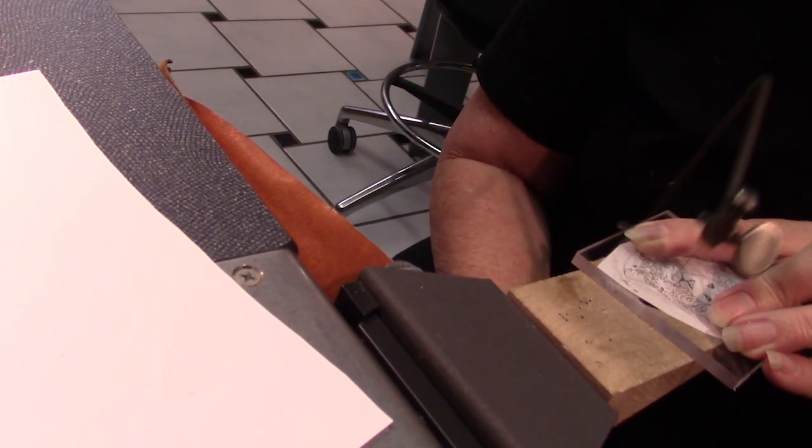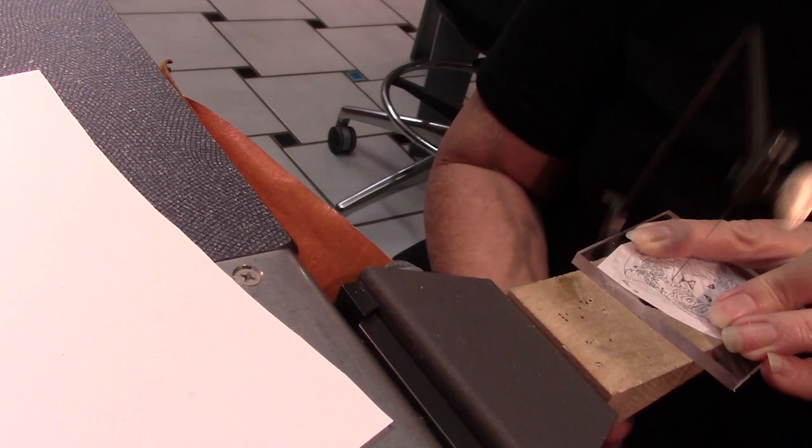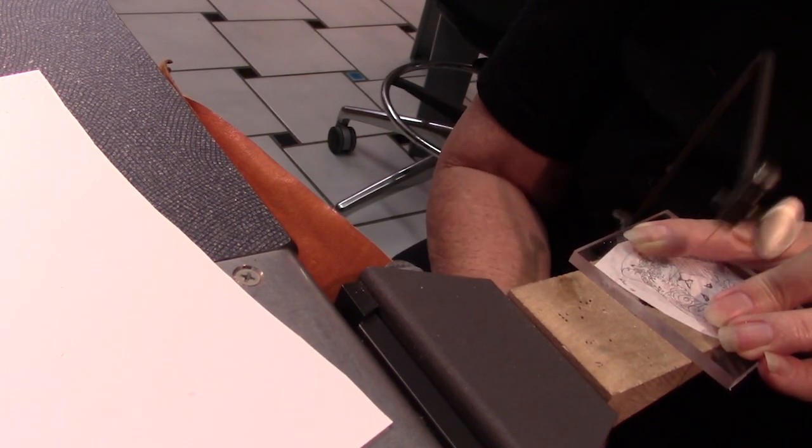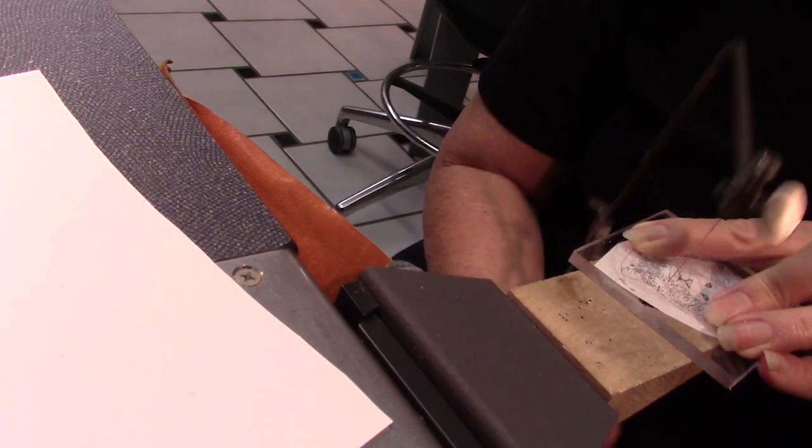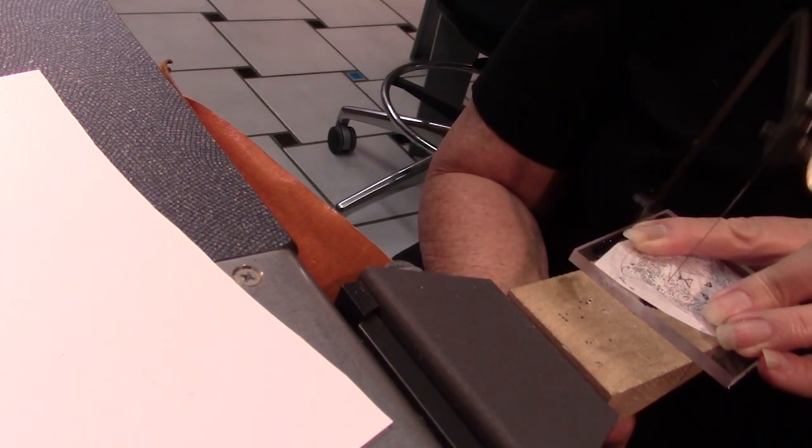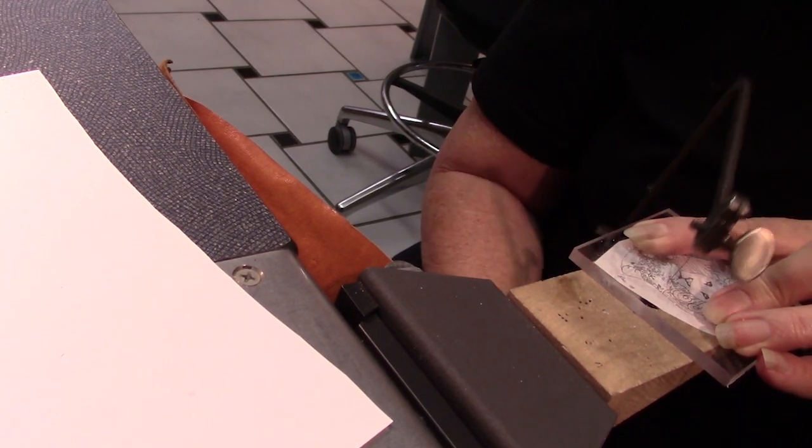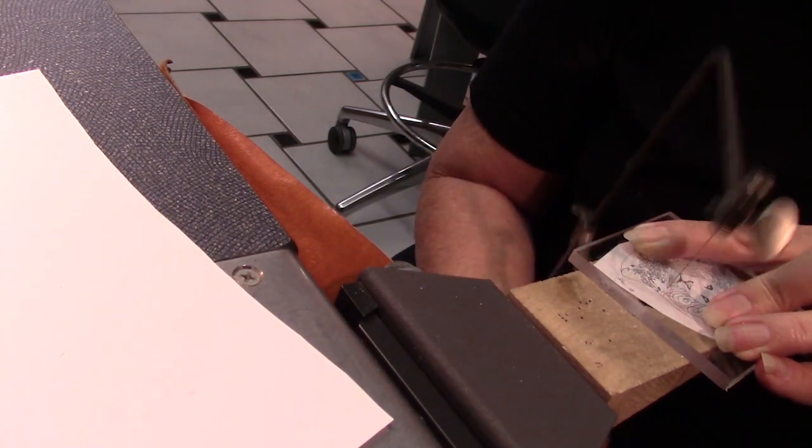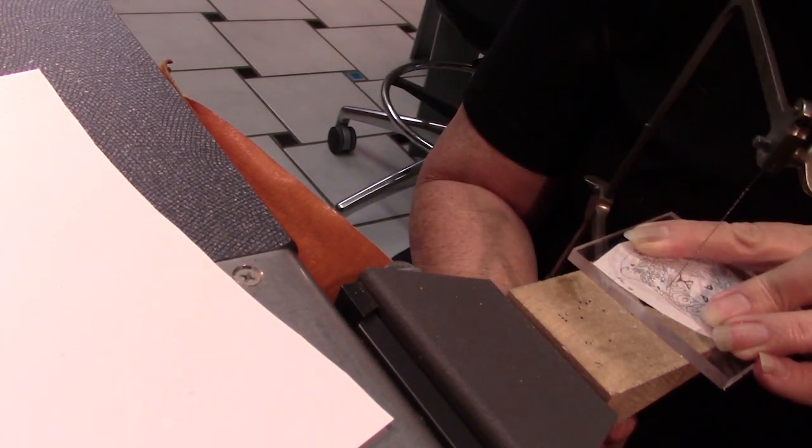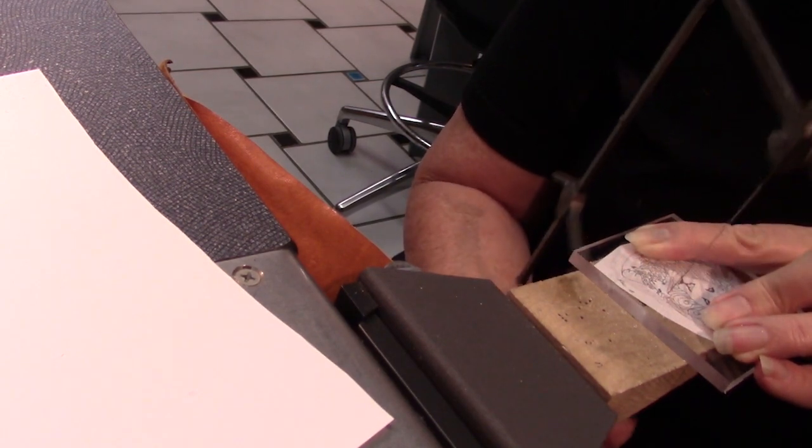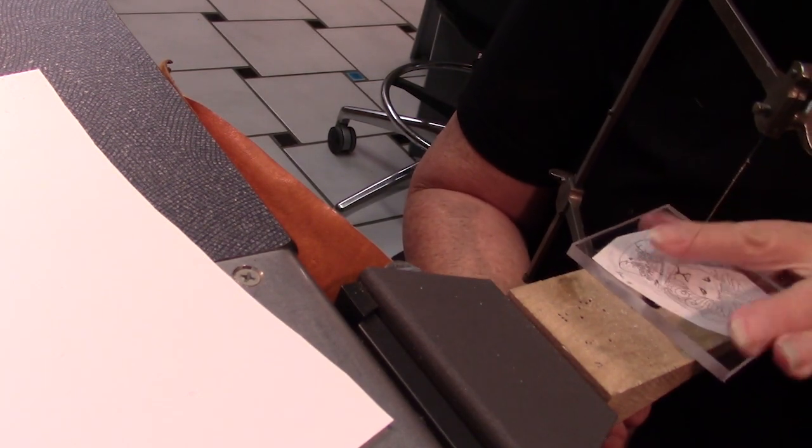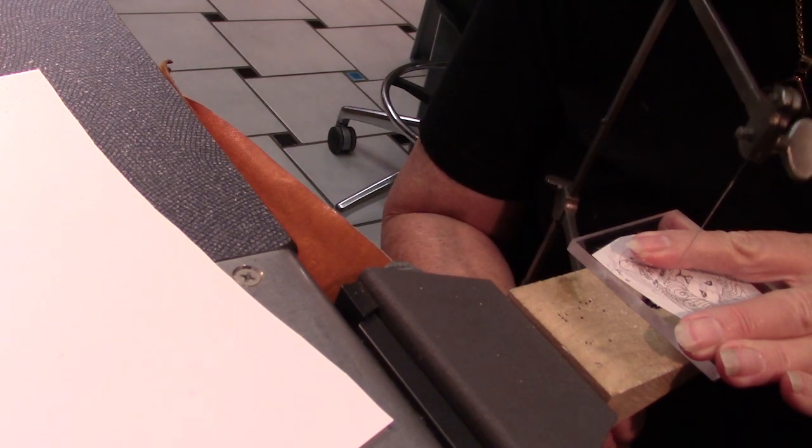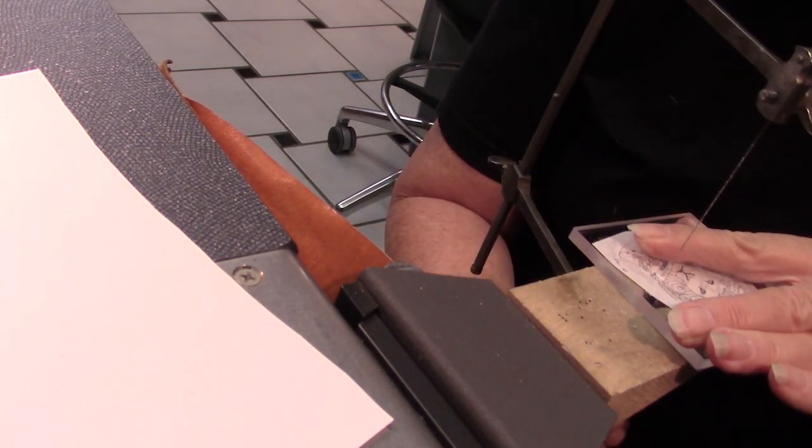So I find that extruded or cast plexiglass works equally well to do this. I don't really find too much difference in them. And I want to saw this as carefully as possible so that I don't have a lot of cleanup to do.